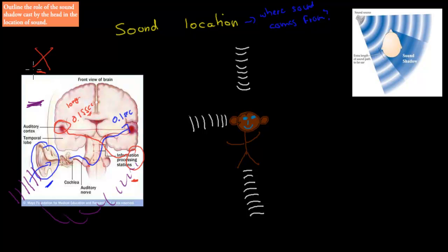The key thing we need to talk about is something called the sound shadow. We need to outline the role of the sound shadow created by the head in the location of sound. So what is the sound shadow, and how does it help us locate sound? For example, if you have a sound source — a stereo — and your head is facing more or less in the direction of that sound, the sound waves will start coming and hit your head.